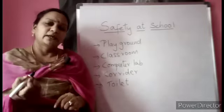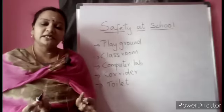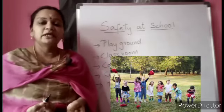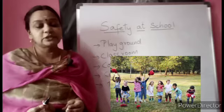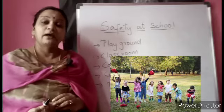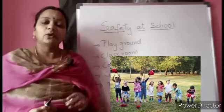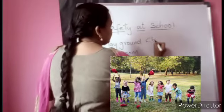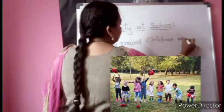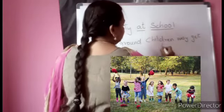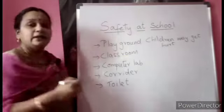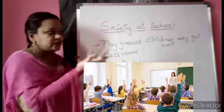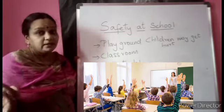First place is the playground. Is there any possibility for an accident to occur in the playground? Yes, an accident can occur in the playground. Children may get hurt there. And in the classroom, some accidents can also occur — children may get hurt, they may cry with pain.